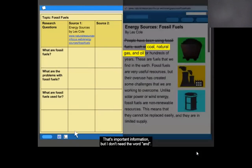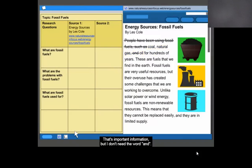That's important information, but I don't need the word, and. I know that people have been using fuel for hundreds of years, so I don't need that information either. So, what am I left with? The words coal, natural gas, and oil. I'll add those to my chart.